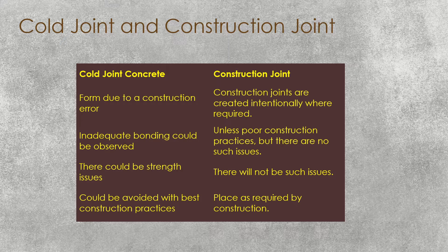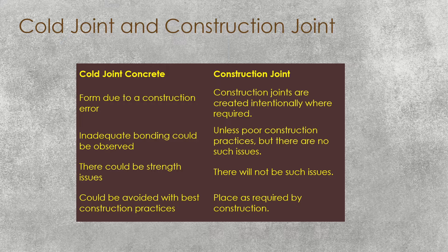Comparing Cold Joint and Construction Joint: a Cold Joint is formed due to construction errors. But a Construction Joint is created intentionally based on construction requirements — it is an intentional joint we create. Inadequate binding could occur in a Cold Joint, but in a Construction Joint, unless there are bad construction practices, there won't be such issues. Where high stresses occur at construction joints, we take necessary precautions like adding dowel bars, shear keys, and chipping the joint to improve bonding. In a Cold Joint, there will always be a weak joint.